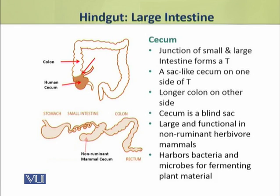In these mammals, there are bacteria and microbes which break down plant materials. Non-ruminants do not have a rumen stomach, so fermentation does not occur there. But in non-ruminants, the fermentation process occurs in the cecum.